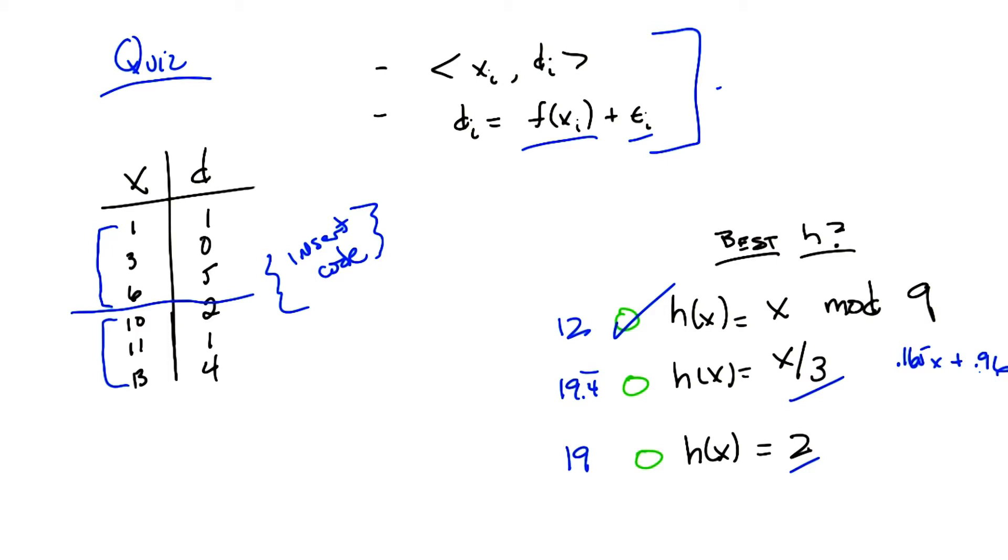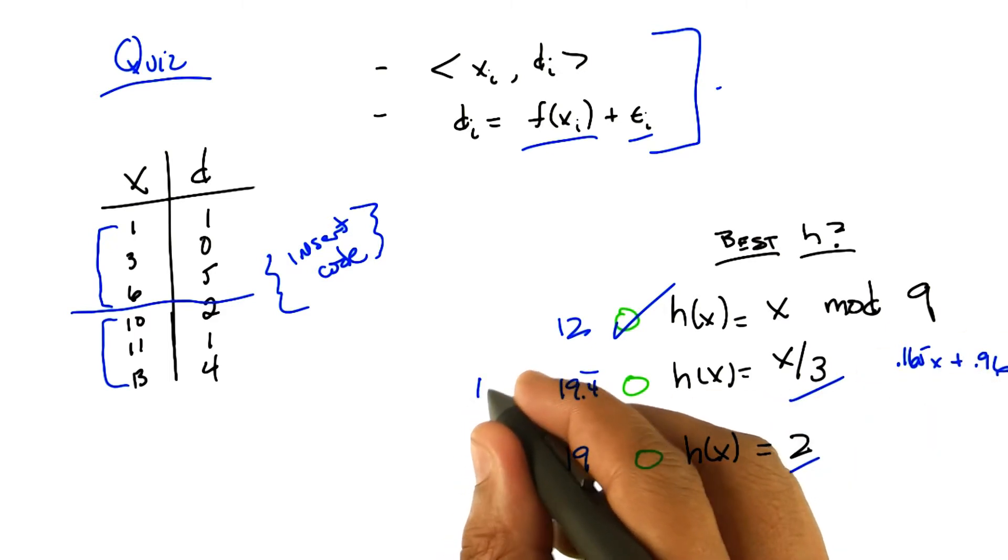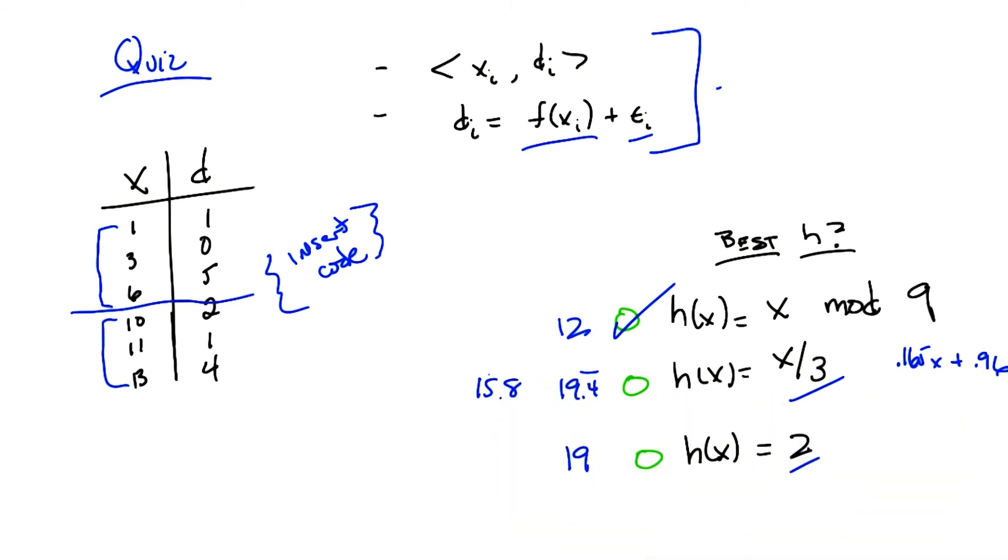Mm-hm. And now I need to take the difference between that and d, square it, and sum. 15.7. Hm. So that gives you 15, I'm going to say 15.8. So that is better. Yeah, so it's better than the x over 3, but it's also worse than the mod 9.